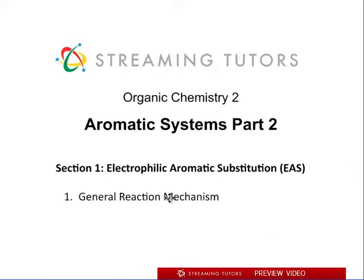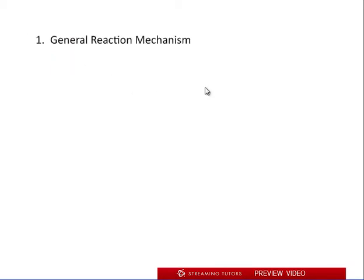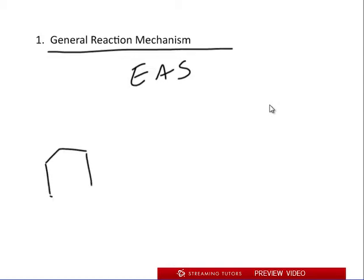Now let's go over the general mechanism. Keep in mind, like I just said, this mechanism covers almost every reaction that you're going to learn about in this chapter. This is called the EAS mechanism, the electrophilic aromatic substitution mechanism.